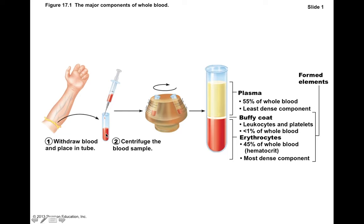The problem with just looking at whole blood is you can't really see the individual components as they would be separated. What we can do is take whole blood and put it into a centrifuge, which spins really quickly. That amplifies gravity — we call it G-force. These centrifuges operate on the order of thousands of Gs, thousands of times the normal force of gravity.